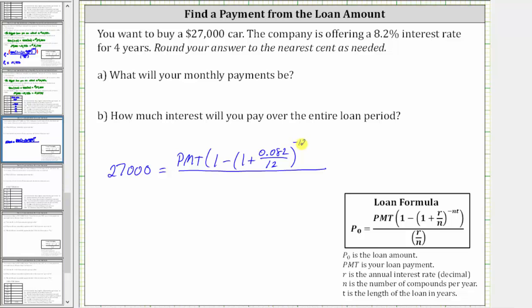Where we know n is 12, so we have negative 12 times t, is the length of the loan in years, and therefore t is four. Then we have close parenthesis, all this is divided by r divided by n, which is 0.082 divided by 12.